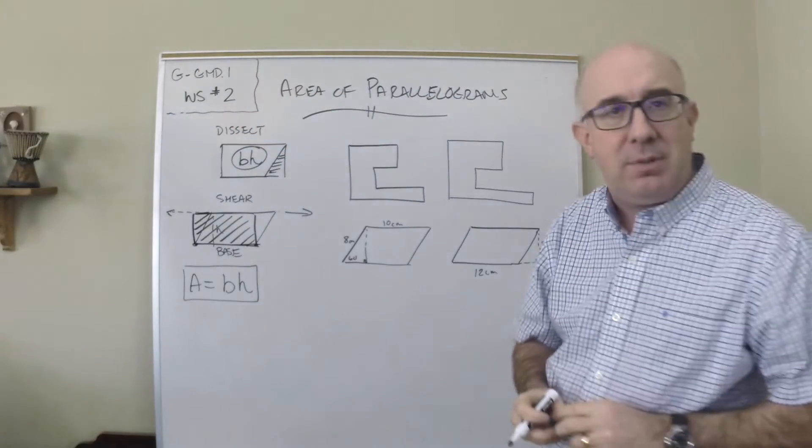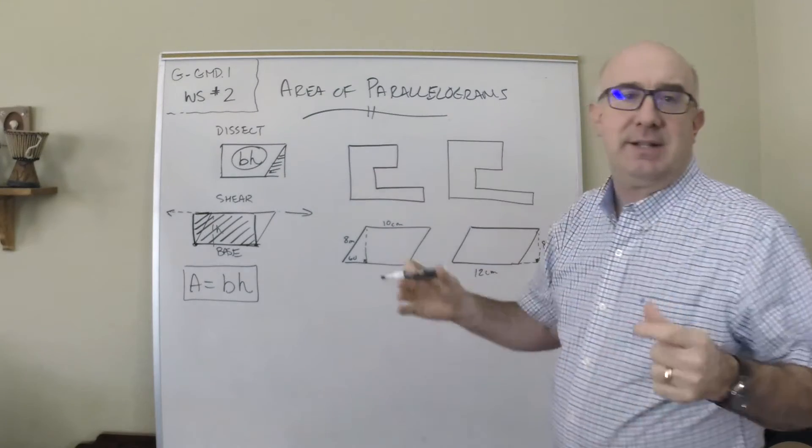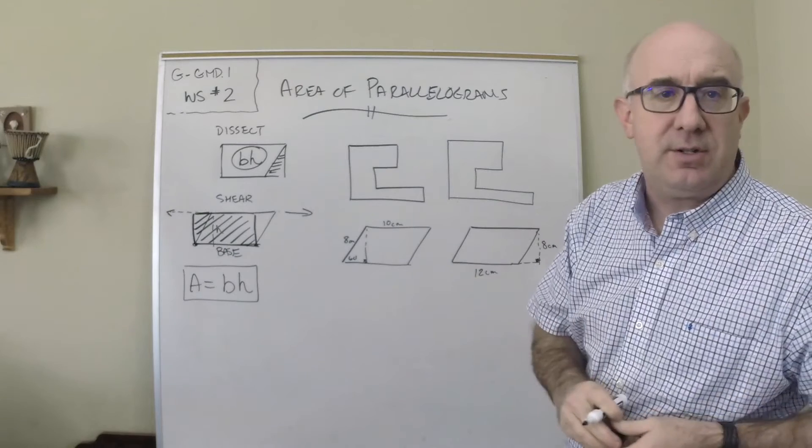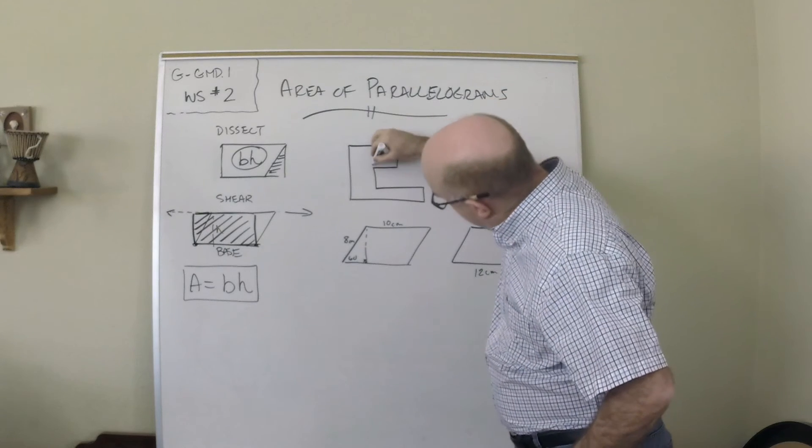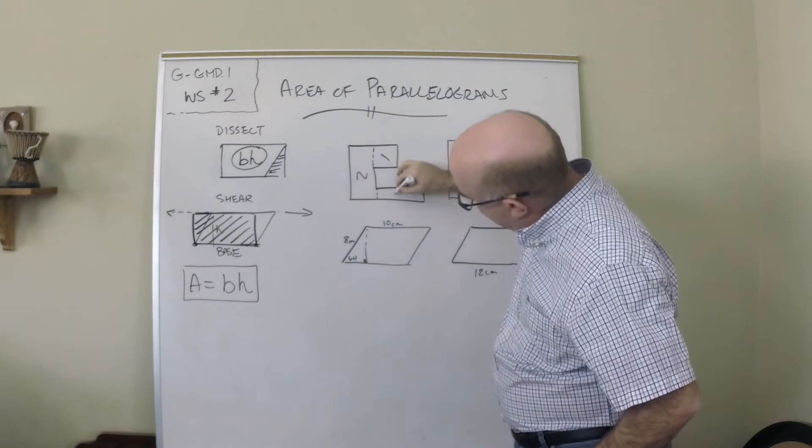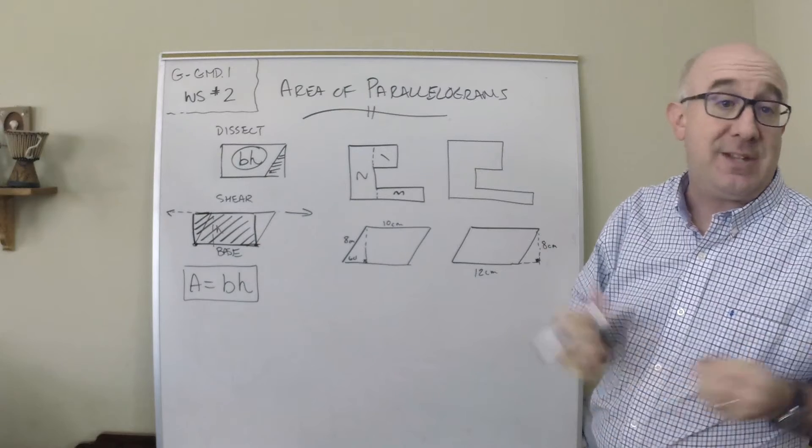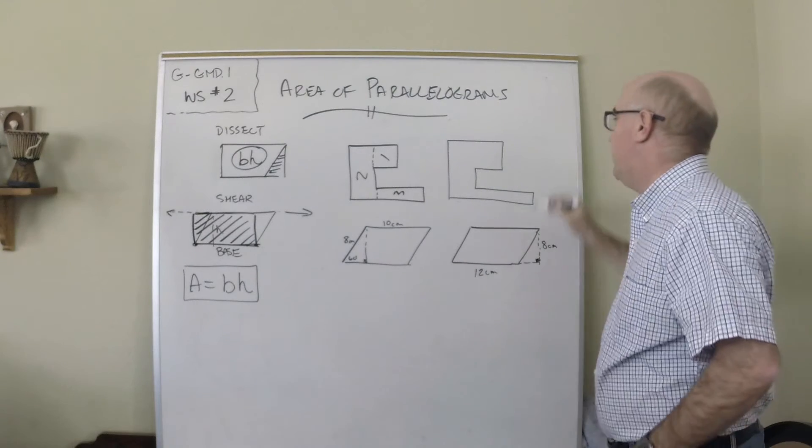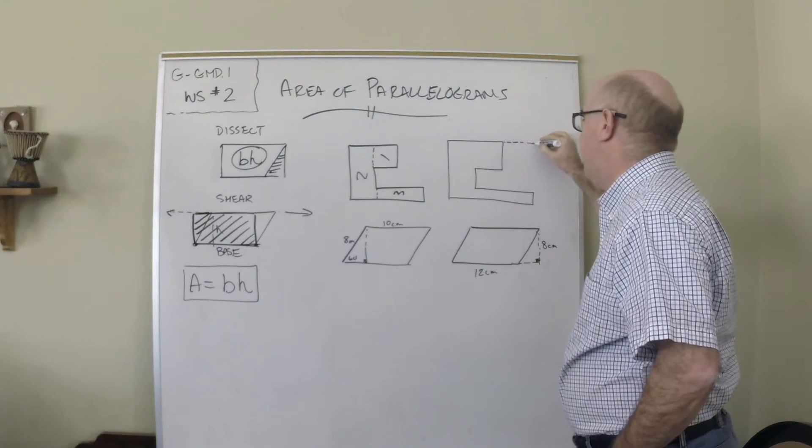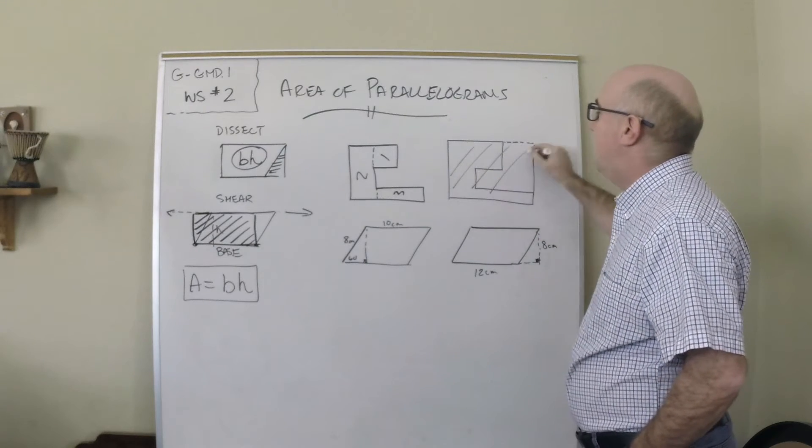A couple quick discussions of some problems here. Whenever you get a composite shape of rectangles and squares, you can think about it in terms of cutting it into pieces. You can do this little guy, this guy, and this guy. There are many ways to cut it up, but that's one set.